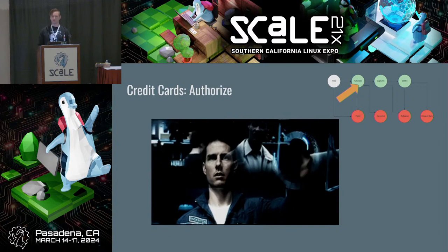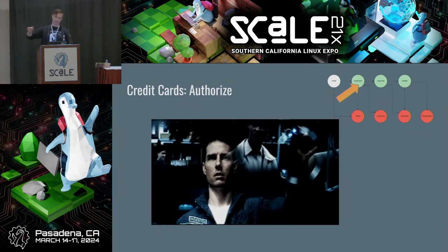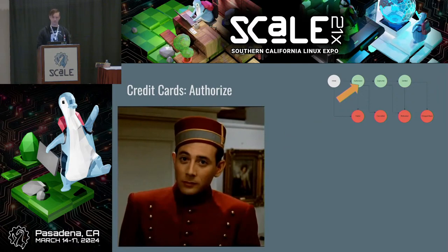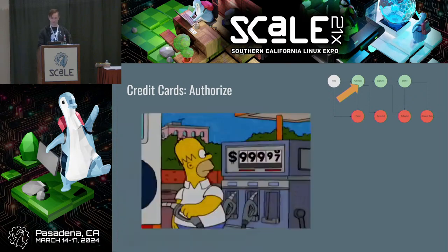There's a reason you might linger in the authorization phase. One example is fraud detection — before a transaction is fully captured, it might go through some fraud review. Another example: you go to a hotel and they have you swipe your card to put a hold, to make sure you don't run up a big minibar tab. At the end they can capture up to the authorized amount, or it'll fall off and get voided. If you ever have a pending transaction on your credit card statement, that's this authorization phase. Same thing at the gas pump — it preauthorizes a certain amount and captures the correct amount at the end.